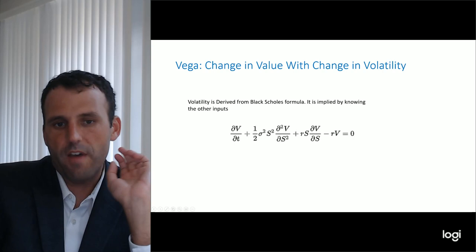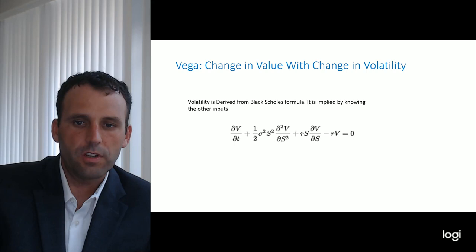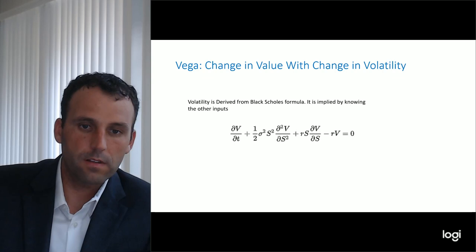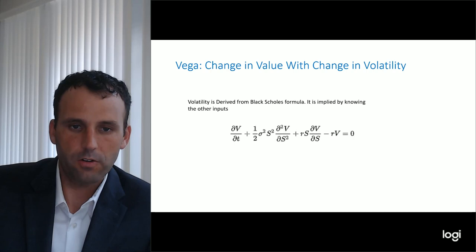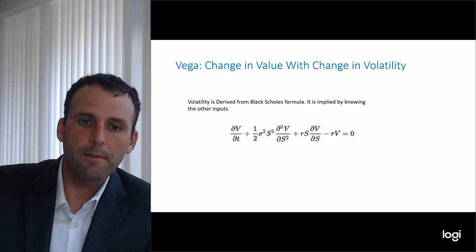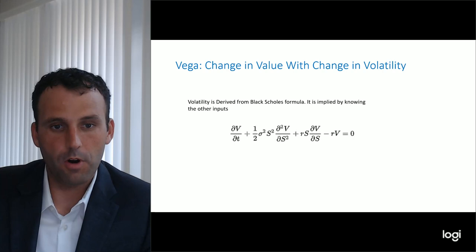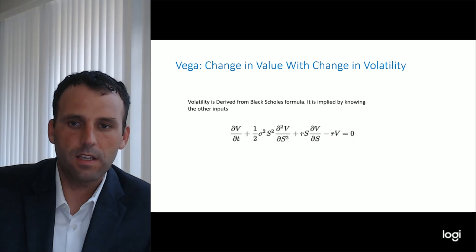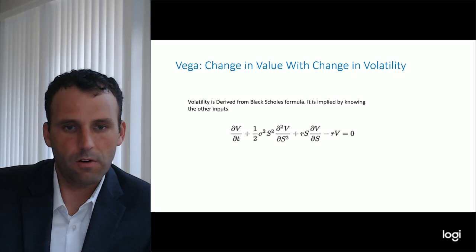Volatility is calculated as a derivation of the Black-Scholes formula, which gives all the components of what price is an option. I'm not going to derive all of Black-Scholes here in this video. But the bottom line is that since we have all the other variables and we have what the option is trading at in the market, we can derive what volatility is — the chunk left over is what the implied volatility is.